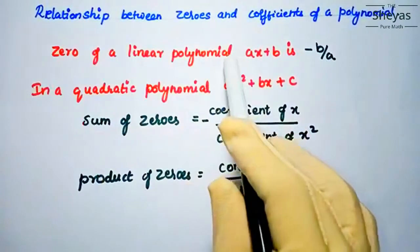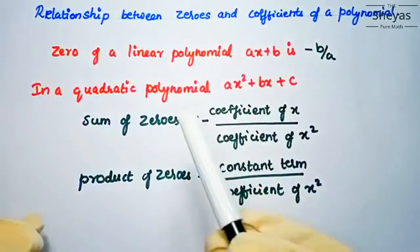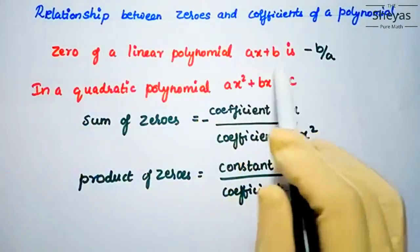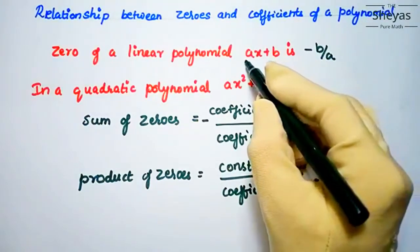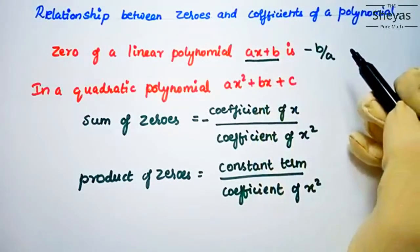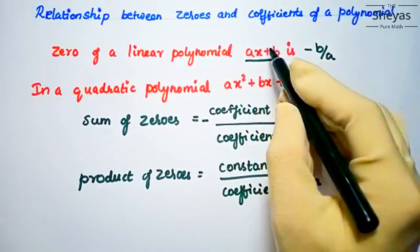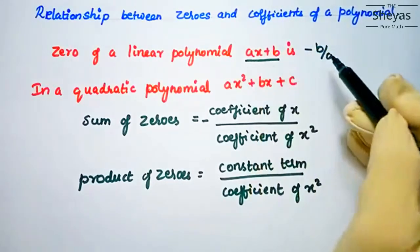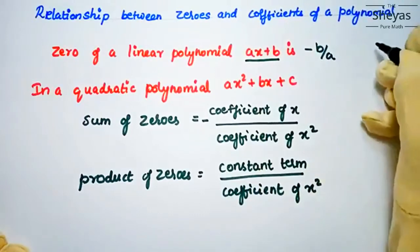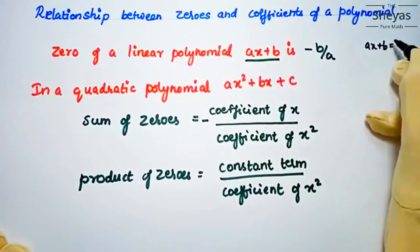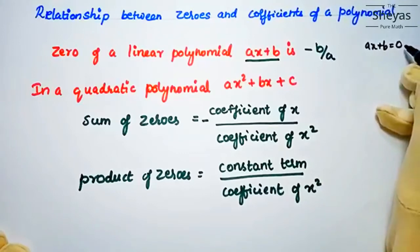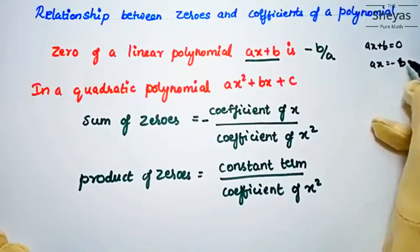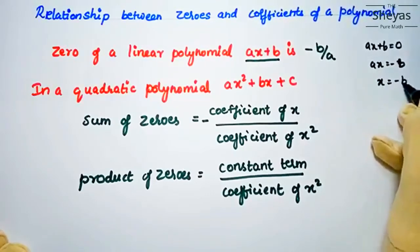Now let us discuss the relationship between zeros and the coefficients of a polynomial. For a linear polynomial, the expression is ax plus b, where the degree or power of x is 1. To find the zero, we equate to zero: ax plus b equals zero, so ax equals minus b, giving x equals minus b by a.